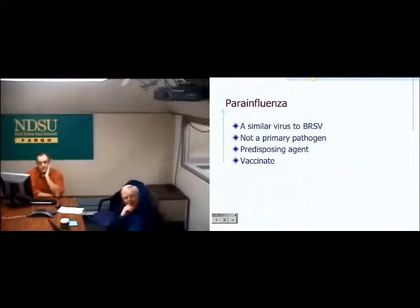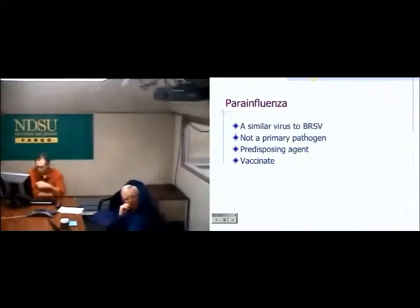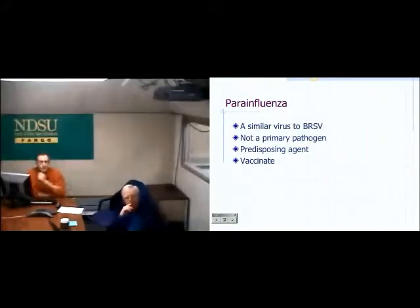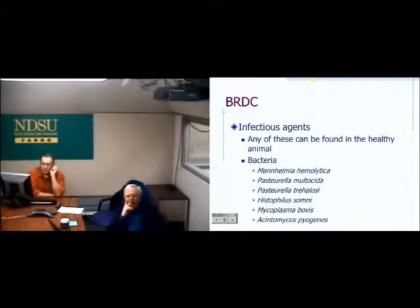The only thing I'll say about PI3 is that it's really not a big deal. It's more of a predisposing infection, so animals with a para-influenza infection might develop a secondary bacterial problem. If you vaccinate for it you're pretty well protected. It's just included in a lot of multiple viral vaccines. BRSV and BVD remain the two big respiratory viruses in cattle.